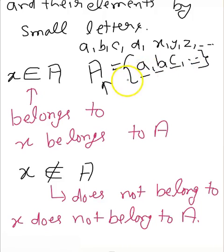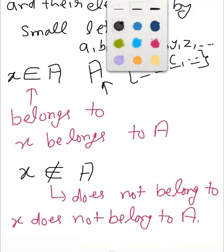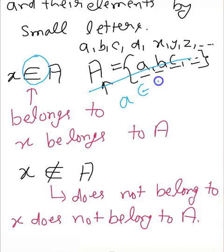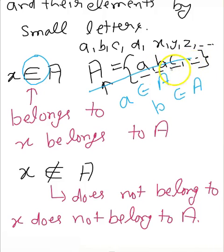Let's discuss another symbol: 'belongs to.' If x is an element in set A, then we say x belongs to A. So using this set, we can say 'a belongs to capital A' or 'b belongs to capital A.' If any element does not belong to A, we use the 'does not belong to' symbol.